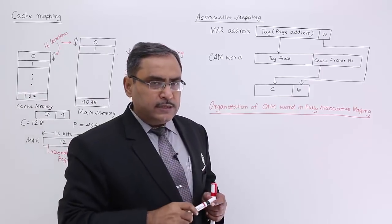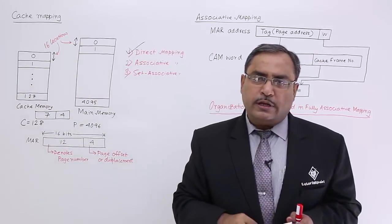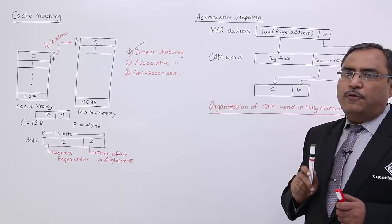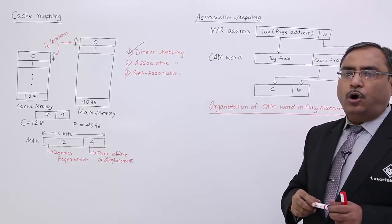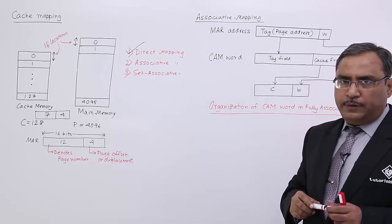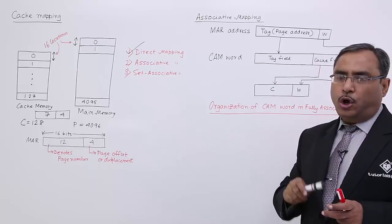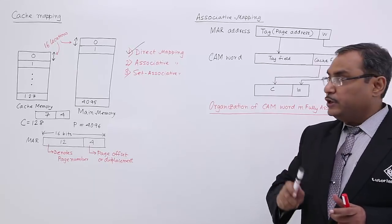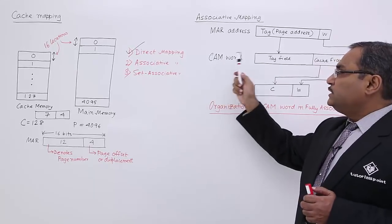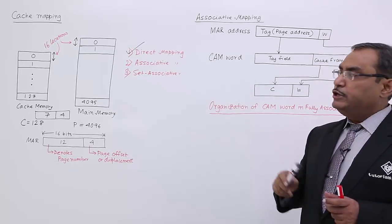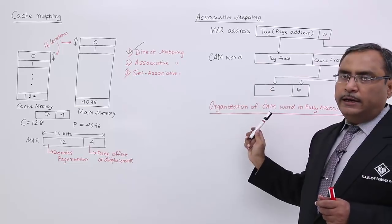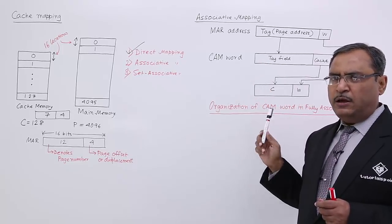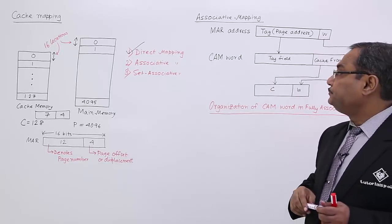Now in this case, we are going to introduce a new type of memory known as a CAM. The full form of CAM is Content Addressable Memory. This content addressable memory is playing a very vital role in case of associative mapping or fully associative mapping.